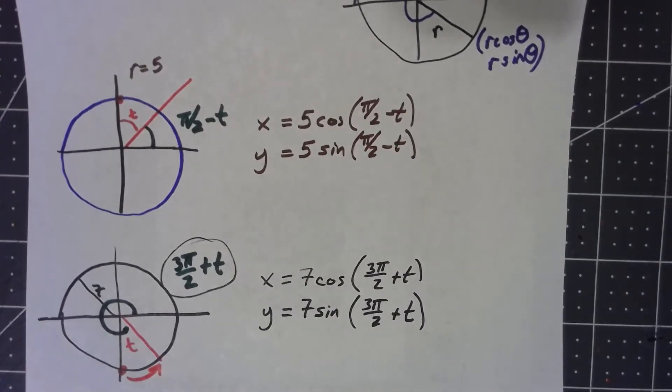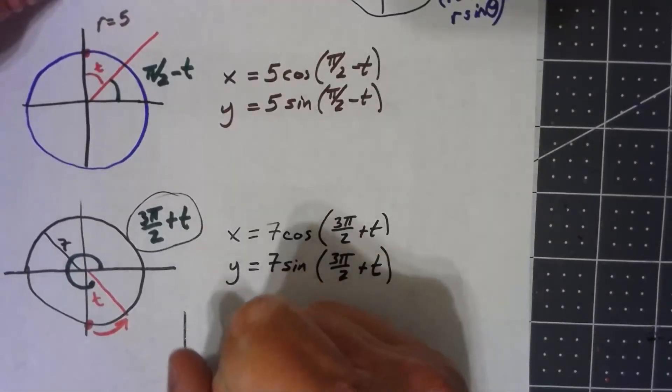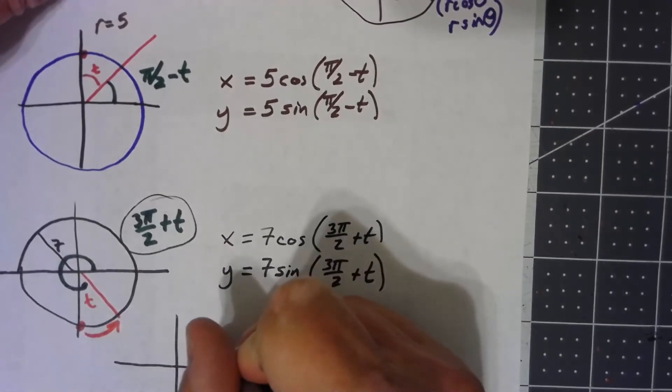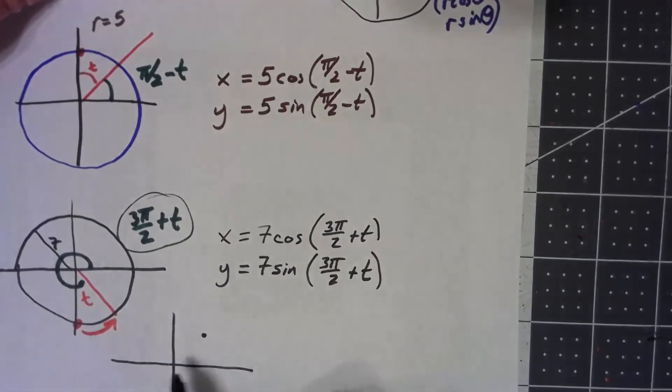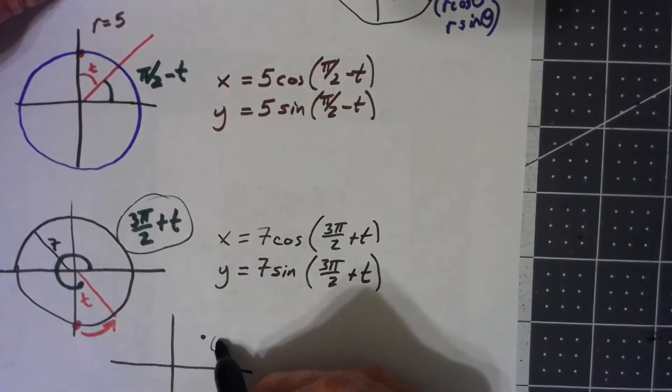Okay, let's do one more just to mix things up a little bit. Let's say the center isn't at 0, 0. What if I've got my center at 2, 3?